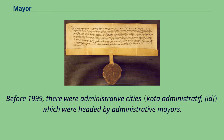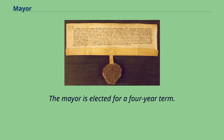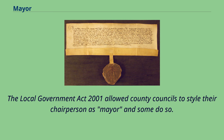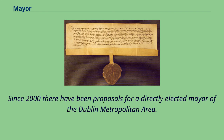Before 1999, there were administrative cities which were headed by administrative mayors. In Iran, the mayor is the executive manager of a city and is elected by the Islamic City Council for a four-year term. In the Republic of Ireland, the head of a borough corporation was called mayor from the Municipal Corporations Act 1840 until boroughs were abolished by the Local Government Reform Act 2014. The Local Government Act 2001 allowed county councils to style their chairperson as mayor, and some do so. City council chairs are mayor. Since 2000 there have been proposals for a directly elected mayor of the Dublin metropolitan area.